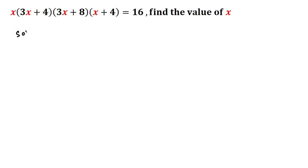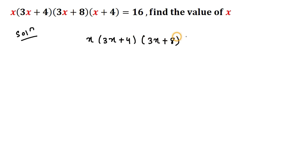Without any delay let's start the solution. We have given x multiplied with (3x+4) multiplied with (3x+8) multiplied with (x+4) equals 16.